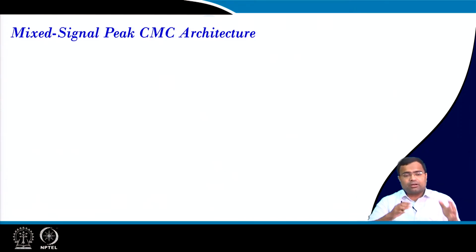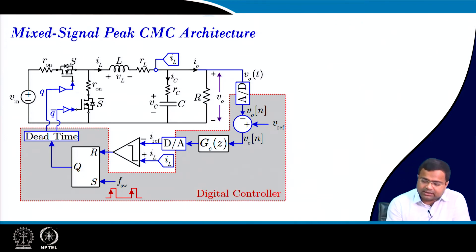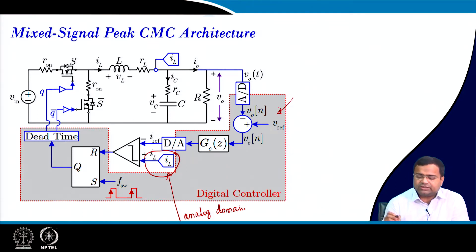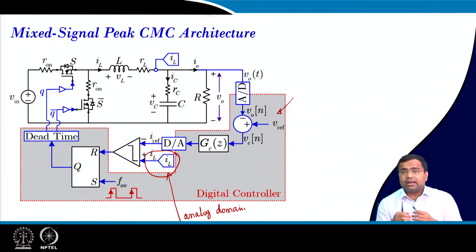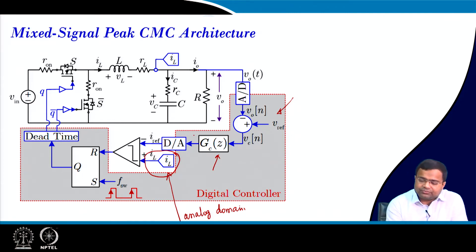First we will talk about mixed signal peak current mode control. When we say mixed signal, the inductor current sense would sense inductor current in the analog domain, whereas the voltage loop is in the digital domain. In the digital domain we can actually tune the controller and program the reference current because we can put a maxing operation.